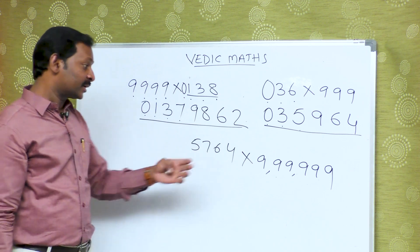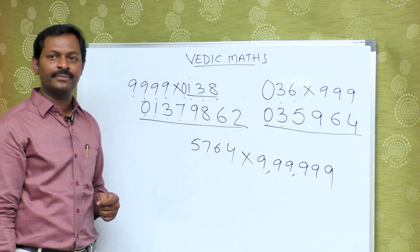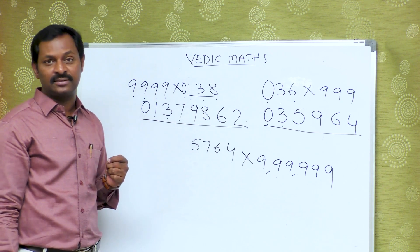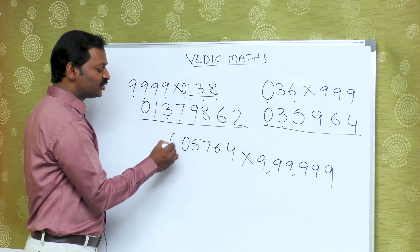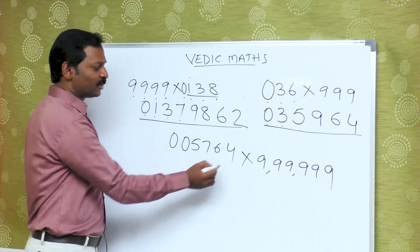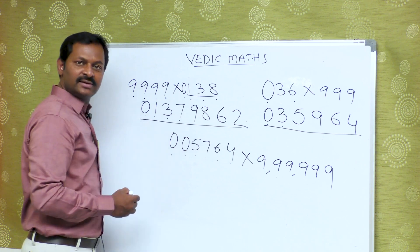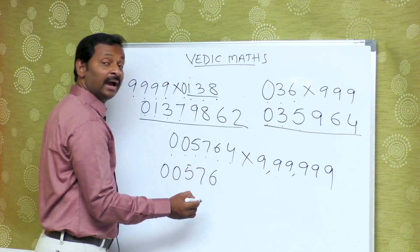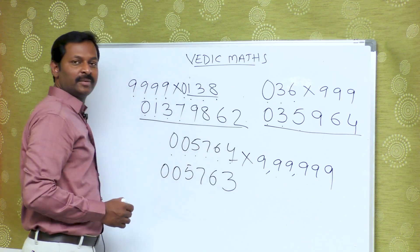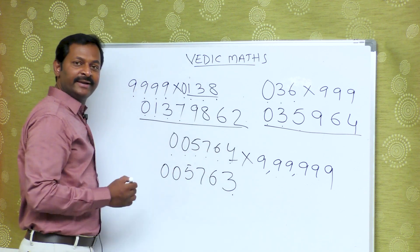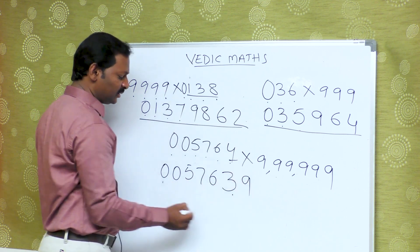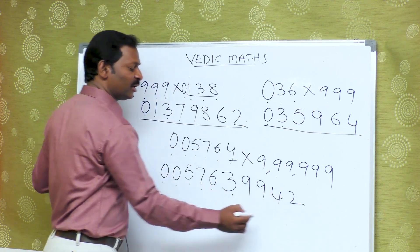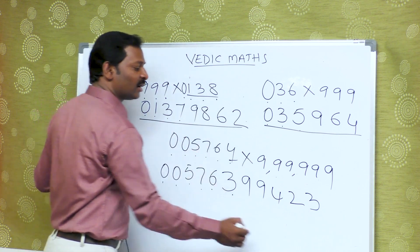If you have 6 digits here and 4 digits here, 6 digits is different. If you have 6 digits you can do it in 6 numbers. If you have 2 digits you can do it in 2. Then if you have a number like 0, 0, 5, 7, 6, 3 — we can do it. 0 combination is 9, 0 combination is 9, 5 combination is 4, 7 combination is 2, 6 combination is 3, and 3 combination is 6.